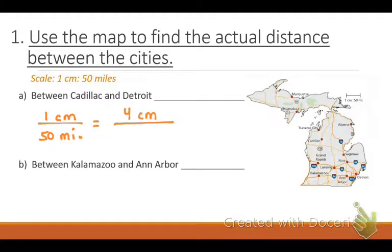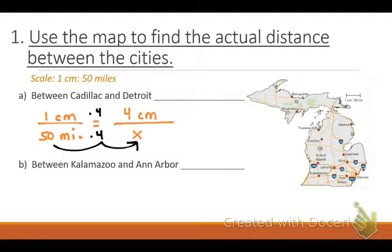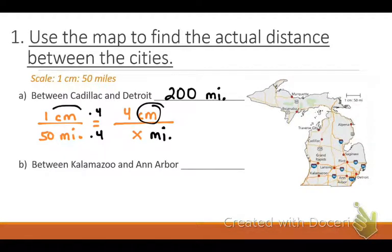Do we know the actual distance yet? No, we don't. So we're going to go ahead and put that as an unknown, X. When we're trying to find X, there's three different methods: cross products, multiplication, and mental math. For me, mental math would probably be the easiest. I've got to figure out how to get from a 50 to an X. In order to do that, I've got to figure out how I got from a 1 to a 4 — I multiplied by 4. So if I multiply the top by 4, you multiply the bottom by 4. 1 times 4 equals 4, and 50 times 4 equals 200. So the distance between them is 200 miles. Go ahead and box that in.